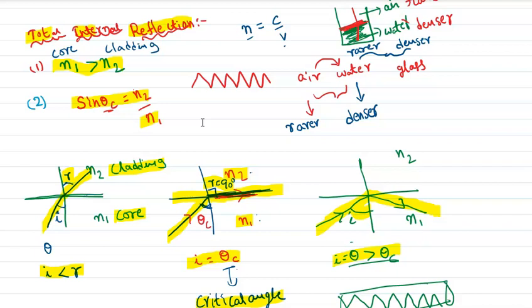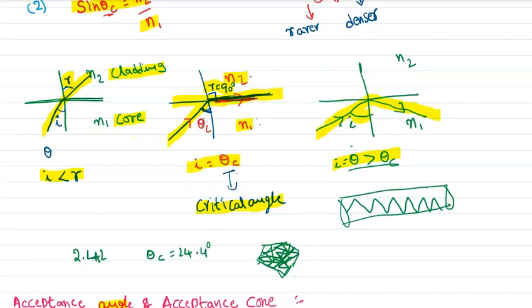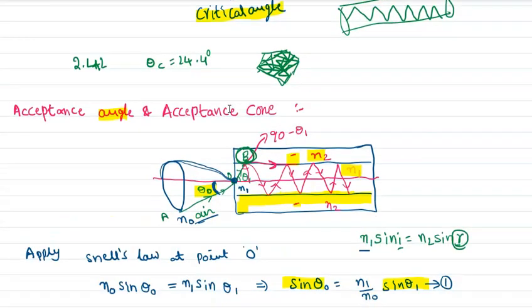The angle of incidence must be greater than the critical angle. The critical angle is the angle of incidence at which the refracted ray grazes along the interface of the core and cladding medium.